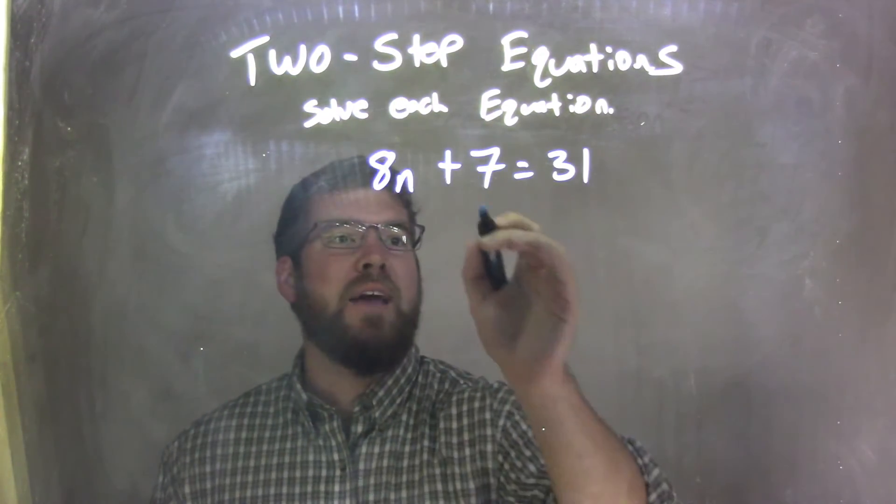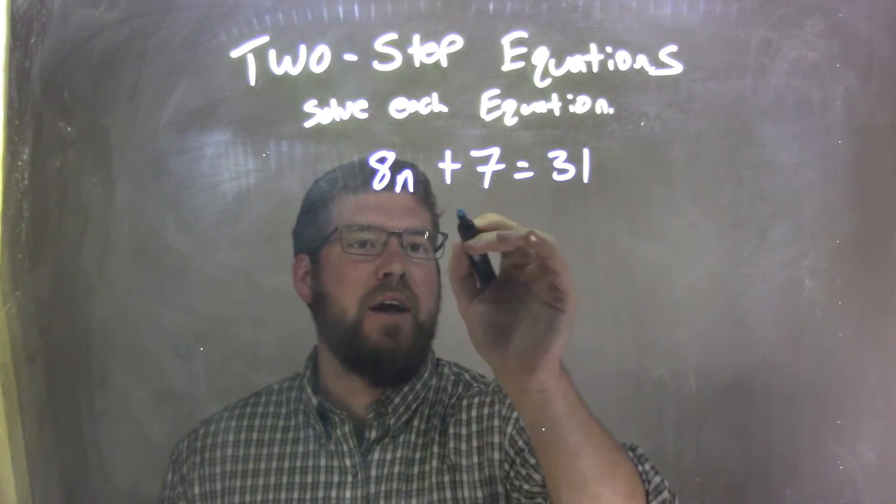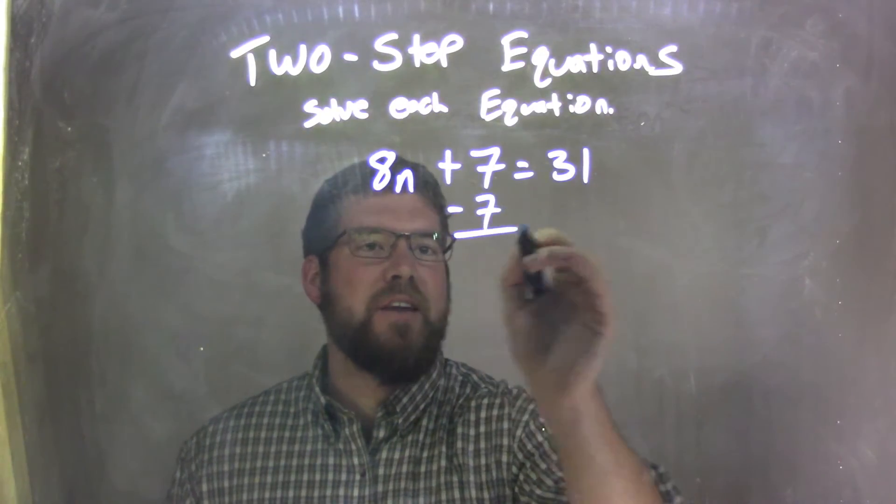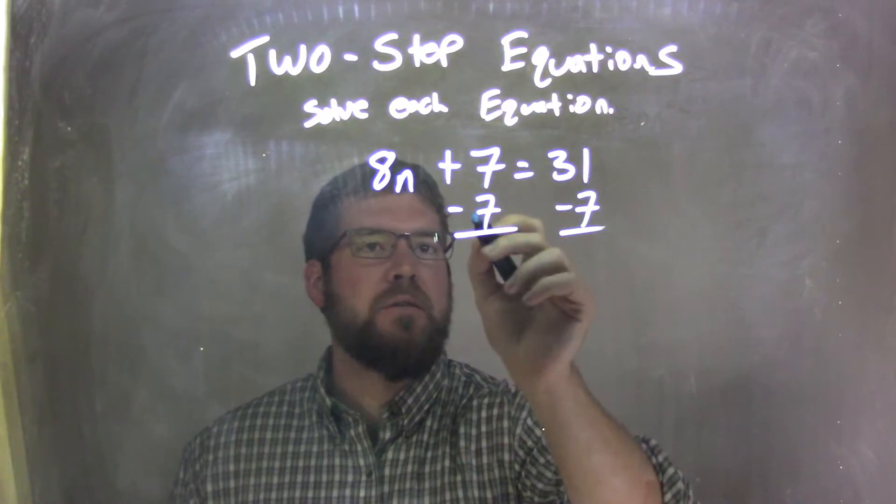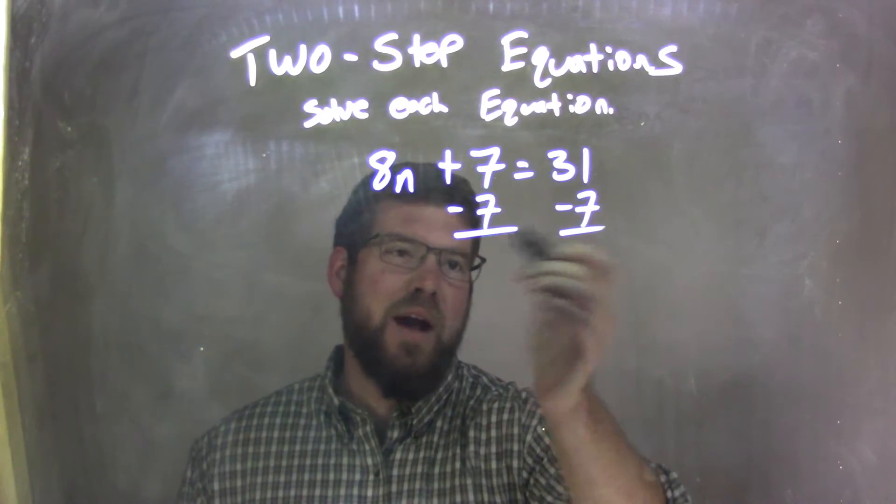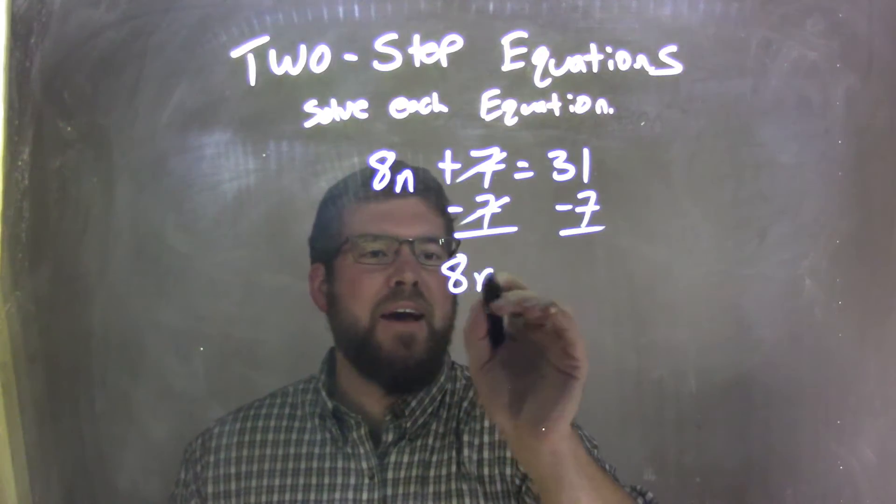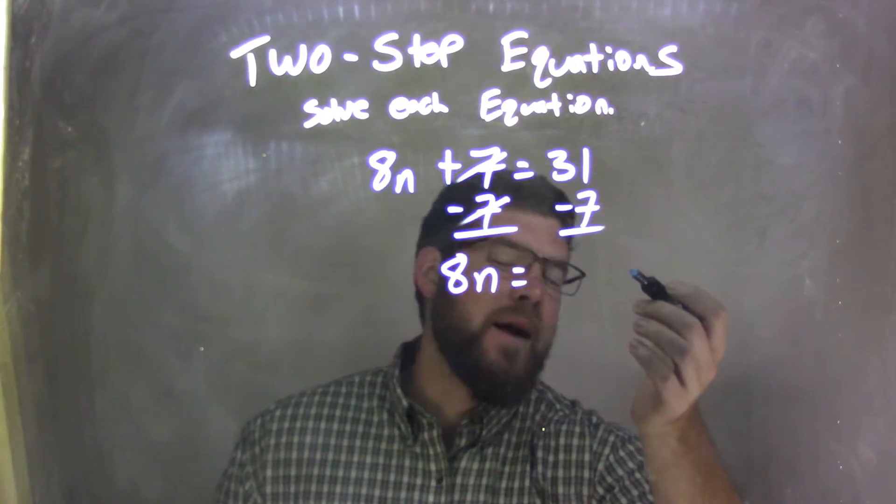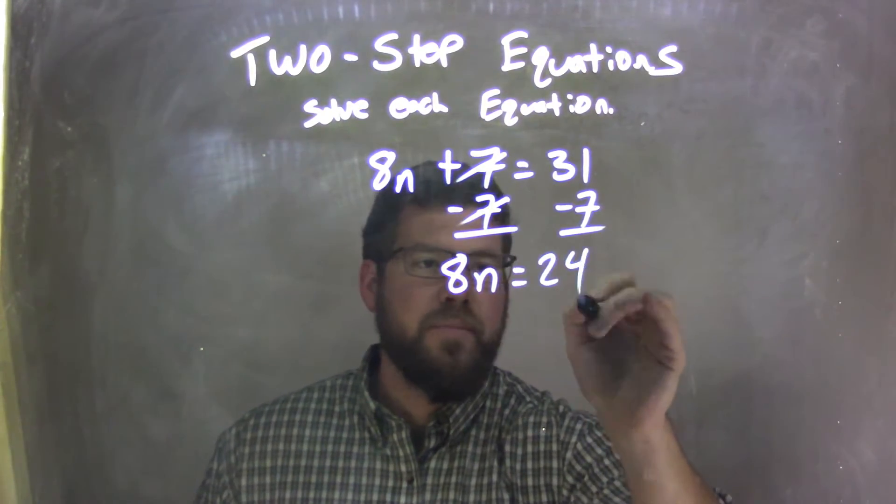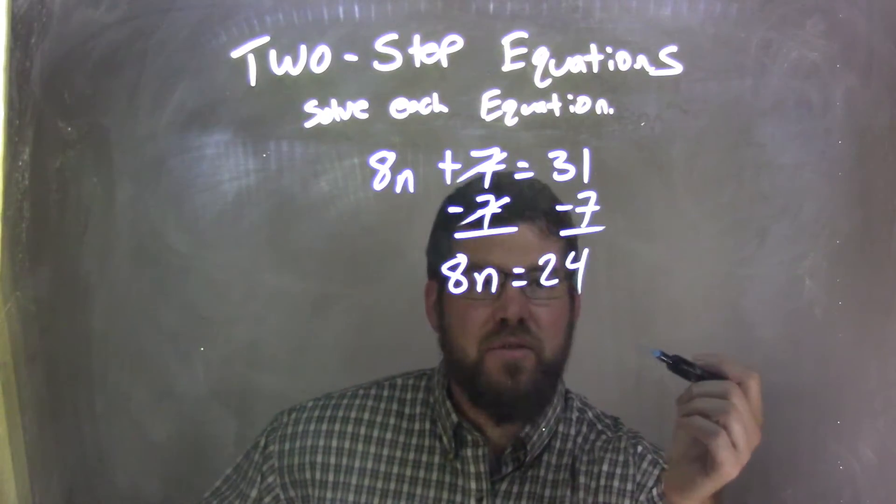Well, my first step here is I need to subtract 7 from both sides. So, if I subtract this 7 here, that's the opposite of that addition that's going on. Adding 7 and subtracting 7 to both sides, these 7s will cancel, bringing me the 8n down here. And what's 31 minus 7? It's 24. So, 31 minus 7 is 24.